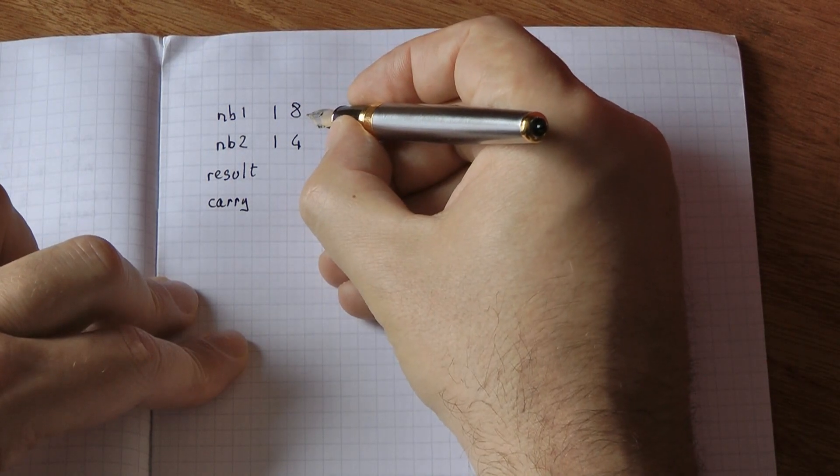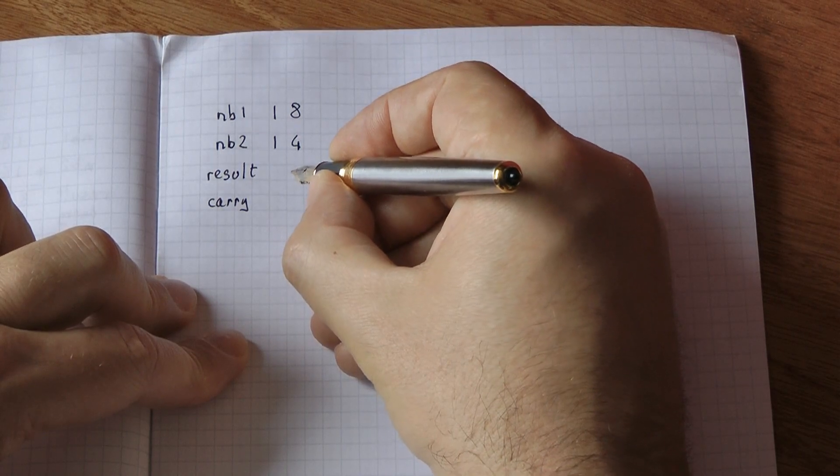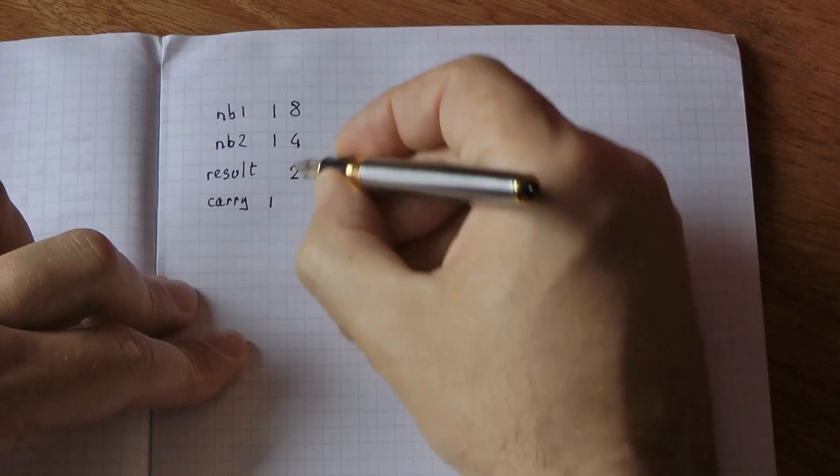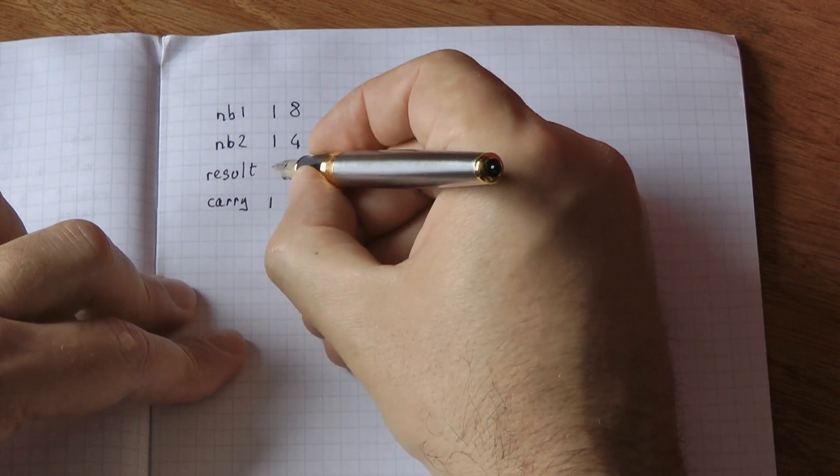Then you proceed column by column. 8 plus 4 is 12. You write 2 and you carry 1 into the next column. And then you've got 1 plus 1, 2, plus 1 for the carry, 3.